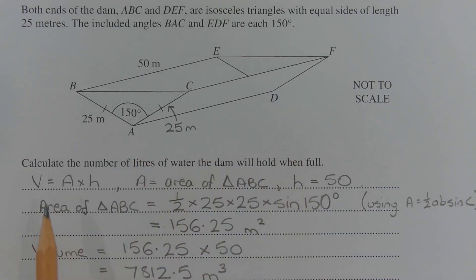Now the area of the cross section is the area of triangle ABC, which is an isosceles triangle, and the height or length of this triangular prism is 50 metres, so H is equal to 50. So we need to find the area of the cross section, which is the area of triangle ABC.